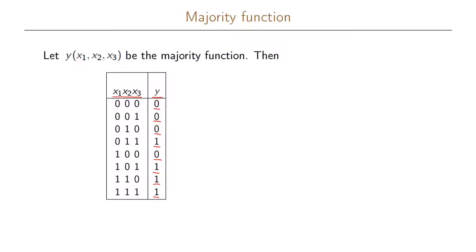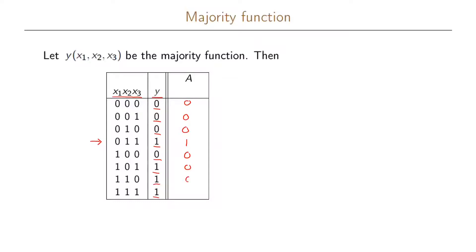One way to realize this function is to divide it into different parts. We start with the first part, which we call A, where we look at only one of the ones in the truth table. We rewrite this as another function that only has a one in that particular position. This function can be written as x1 prime x2 x3, meaning x1 must be 0, x2 must be 1, and x3 must be 1.